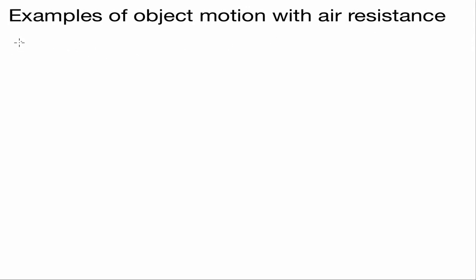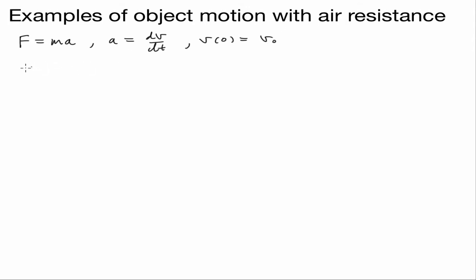Let's recall that we always start with F equals MA, where A is acceleration, otherwise known as dv/dt. We can write this as dv/dt equal to F over M.